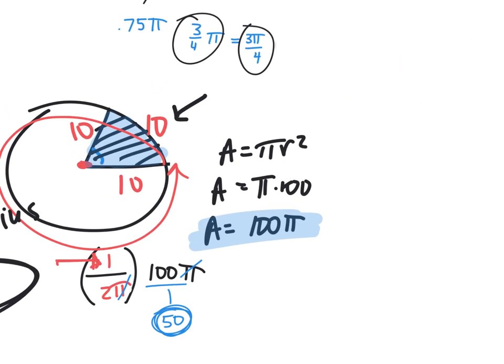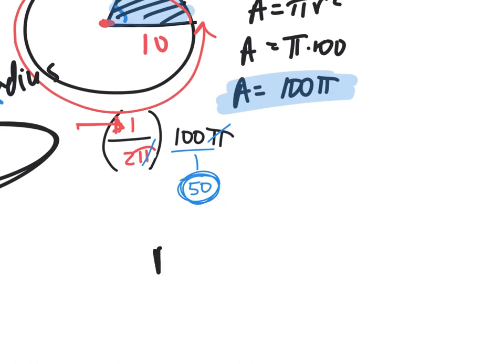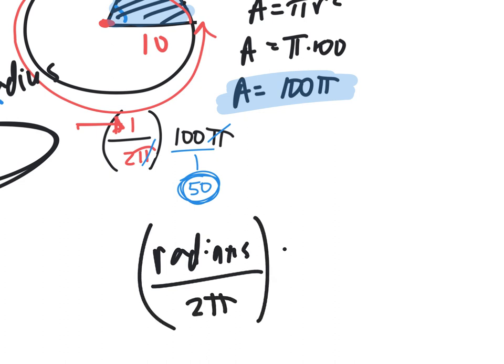This is how you can find the area of that sector, and its formula is: radians over 2 pi times pi r squared. That is the area of a sector. Area of the sector is radians divided by 2 pi times pi r squared. Would those pi's cancel? Absolutely. But I leave it that way just to make sure you understand where it came from.